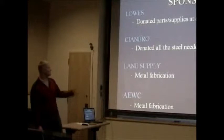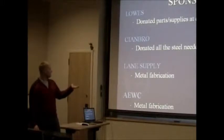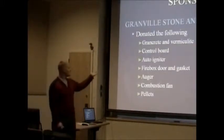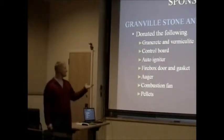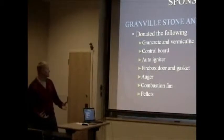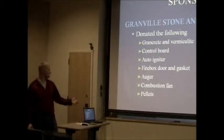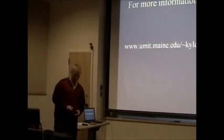These are our sponsors. Lowe's, they donated parts and supplies at cost up to $500. Chimbro donated all the steel we needed for our project. Lane Supply and the AEWC, they helped us with metal fabrication, the water jet. Lane rolled a piece of metal for us. And Granville Stone and Hart, they were our saviors for most of this. They gave us the grancrete and the vermiculite for the refractory. They gave us the control board, the auto-igniter, firebox door, gasket, and the auger, combustion fan, and pellets. And we're out of time, so for any more information you can go to this website. Thank you.